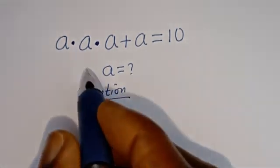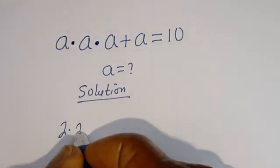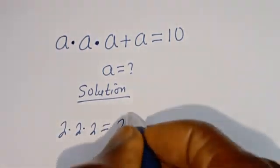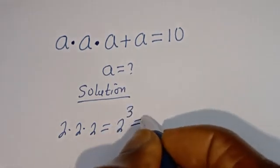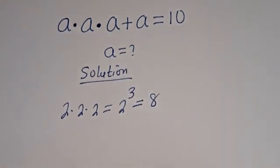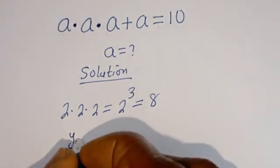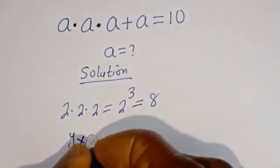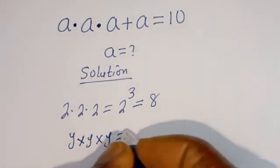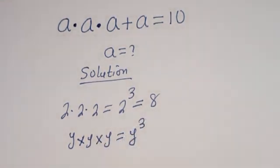Take note that if you have 2 multiplied by 2 multiplied by 2, this is equal to 2 to the power of 3, which is equal to 8. Then if you have Y multiplied by Y multiplied by Y, this is equal to Y to the power of 3.